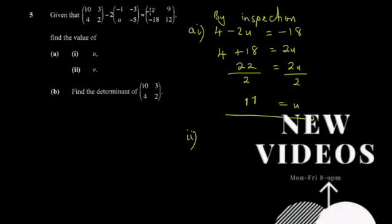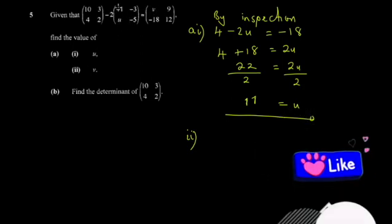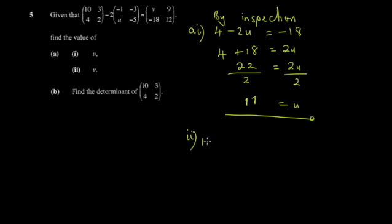So here, we're going to inspect which one? This part here. So it'd be 10 minus 2 multiplied by minus 1. So 10 minus 2 multiplied by minus 1, it's equal to what? It's equal to V.